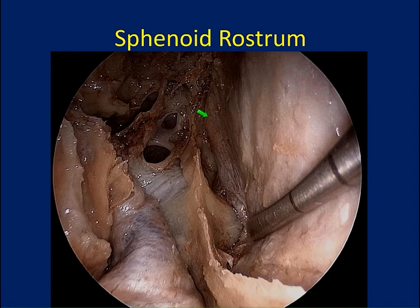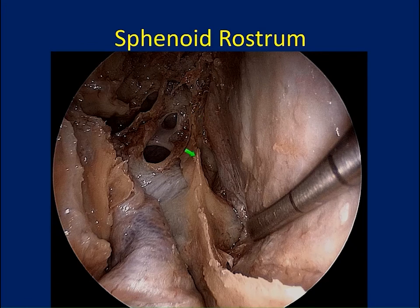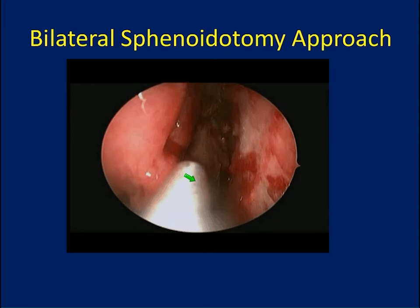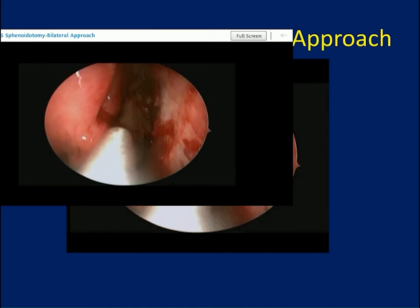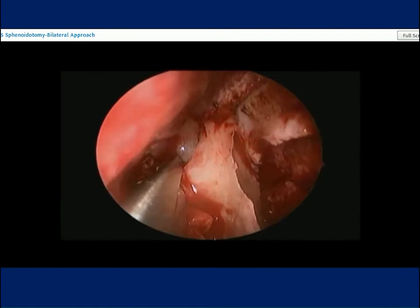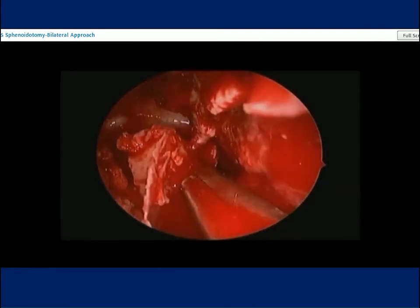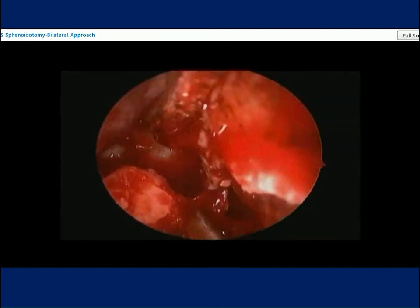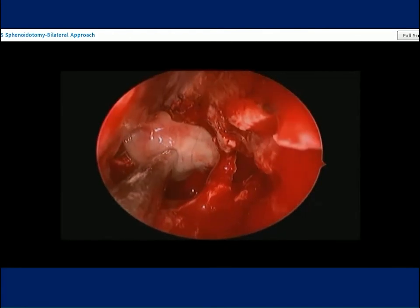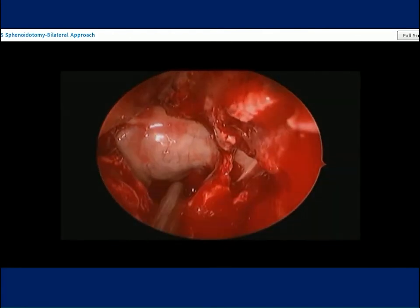Here's an example of a bilateral sphenoidotomy with a large sphenoid rostrum where a nasal septal flap has been elevated on the right side. This classic rostrum or keel separates the two sides of the sphenoid, and its removal allows binarial access. In the video of the bilateral sphenoidotomy approach, you can see us entering the natural sphenoid ostium and using Kerrison rongeurs to quite quickly and efficiently remove the entire keel, increasing working freedom even when there's a dominant sphenoid on one side.